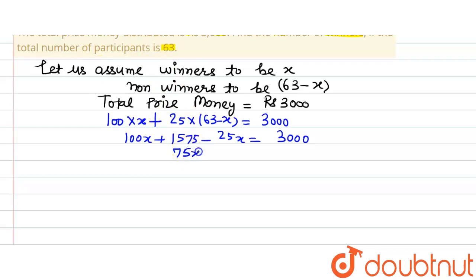75X plus 1575. This plus 1575, when it will go to the right-hand side of the equation, it will become 3000 minus 1575. Now, on solving it further, we will get 1425 is equal to 75X.